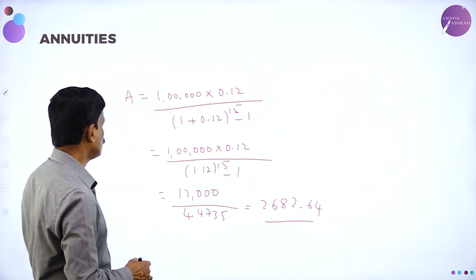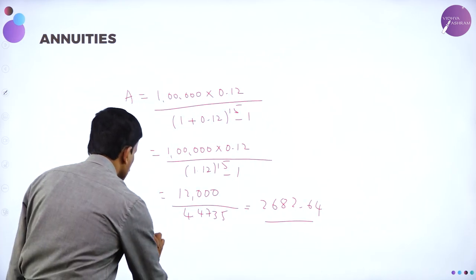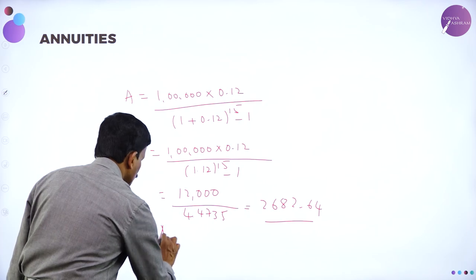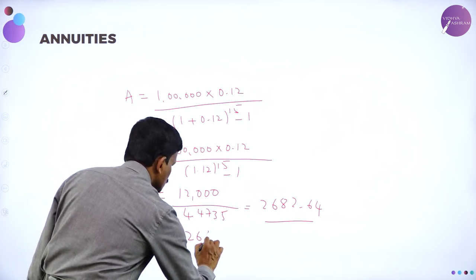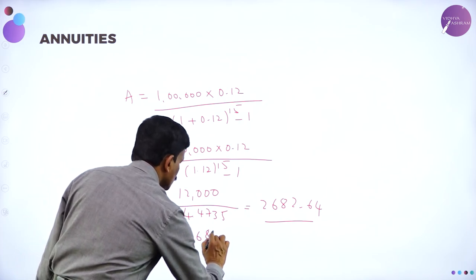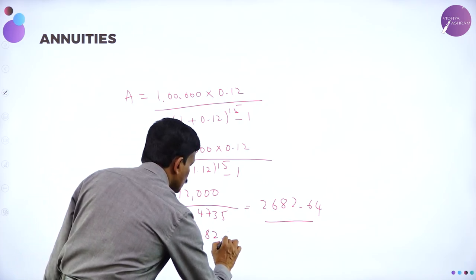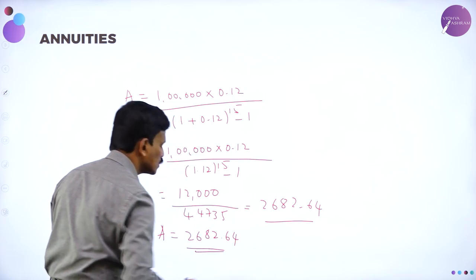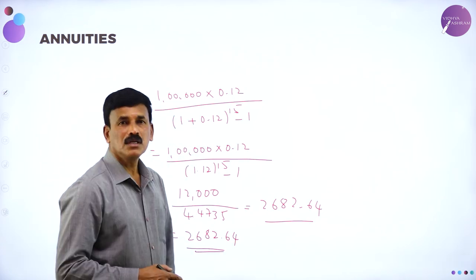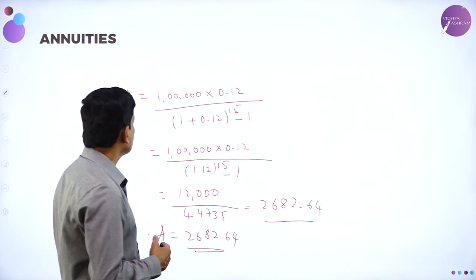Therefore, the amount A equals rupees 2682.64 per year that the father needs to save annually.